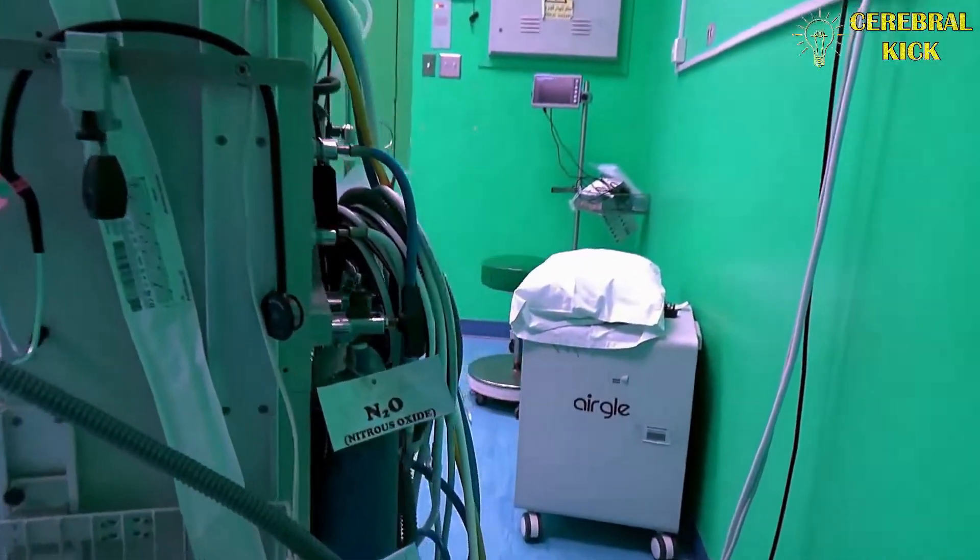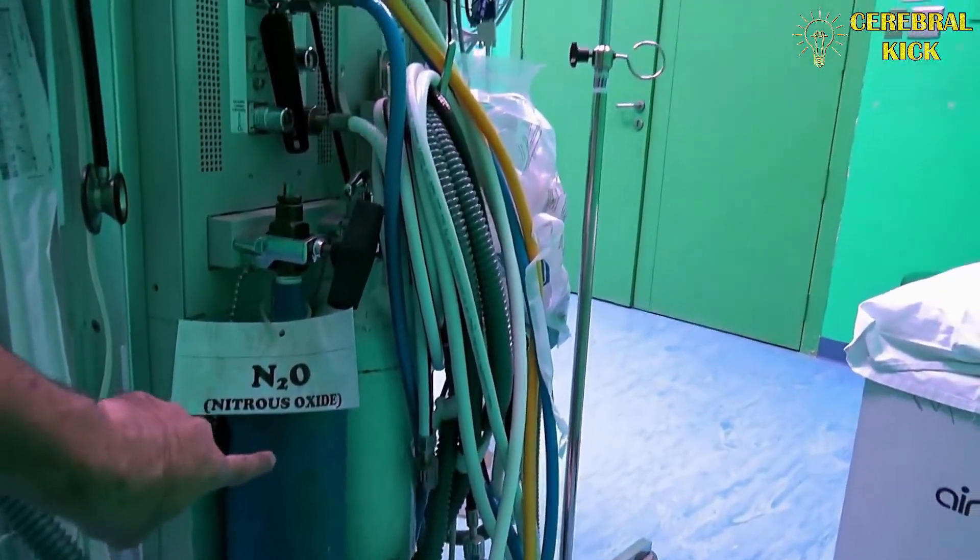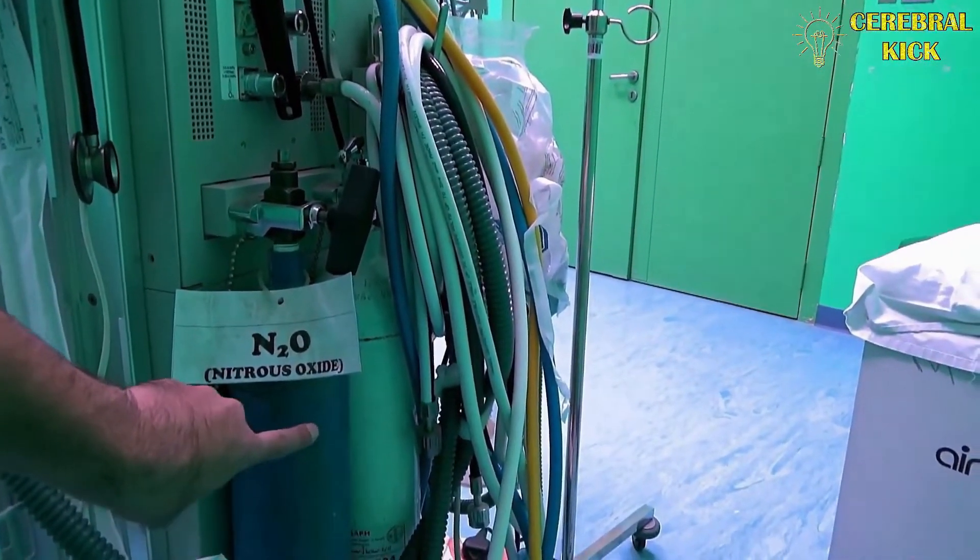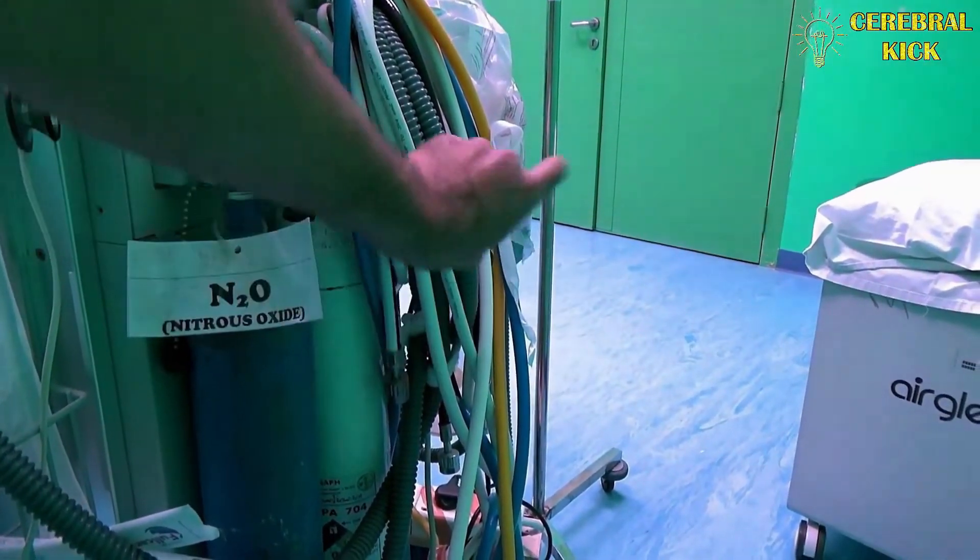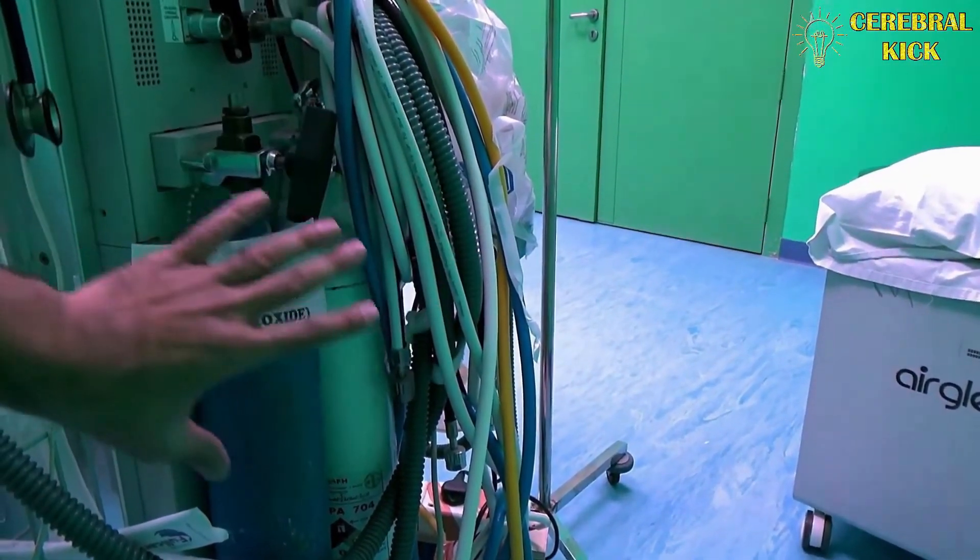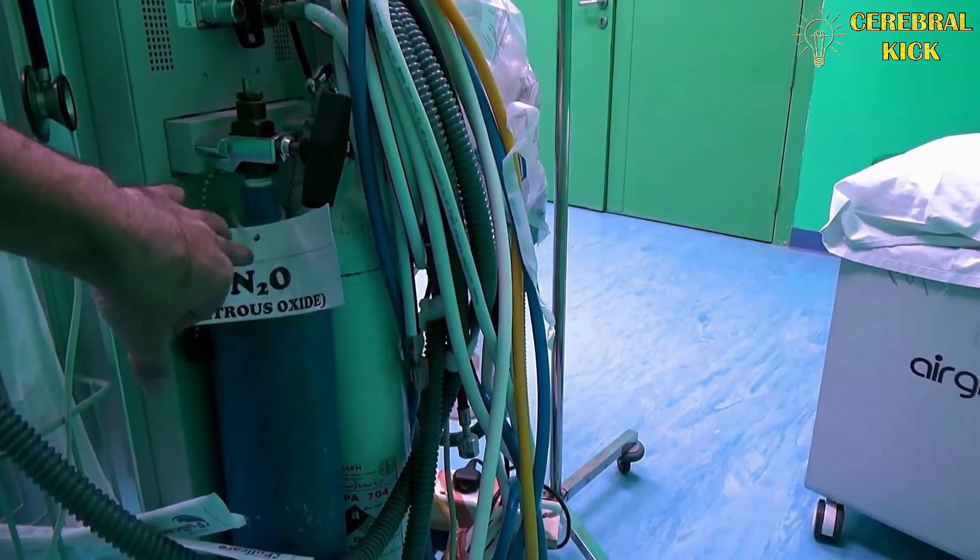The high pressure zone of the machine is located on the back side. The high pressure zone contains the cylinders - there's the nitrous oxide blue colored cylinder, the white oxygen cylinder, and then there is space for the air cylinder. This is the high pressure zone where the pressures are around 750 PSI for nitrous oxide to 2000 PSI for air and oxygen.